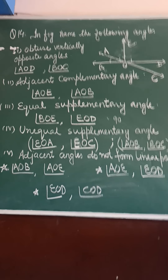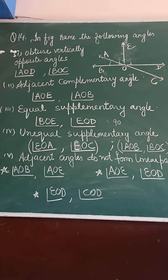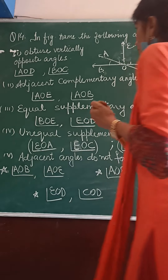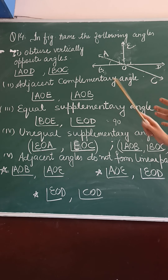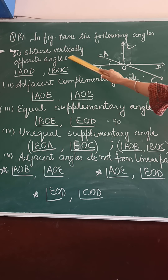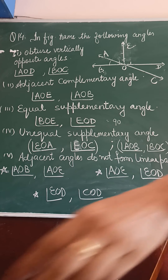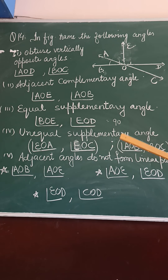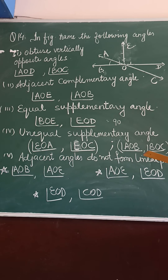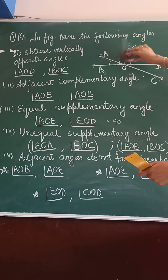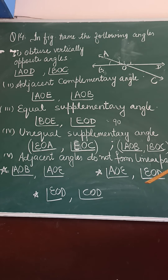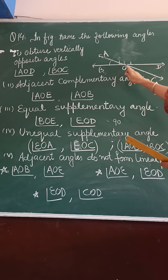Question number 14. In the figure, name the following angles. First, we have obtuse vertical opposite angles. An obtuse angle is more than 90 degrees. For vertical opposite angles, if we remove one line, we get the vertical opposite angles. So, A, O, B and D, O, C — they are acute angles.